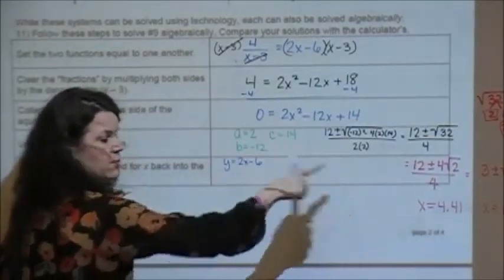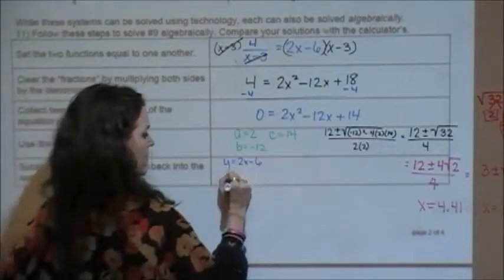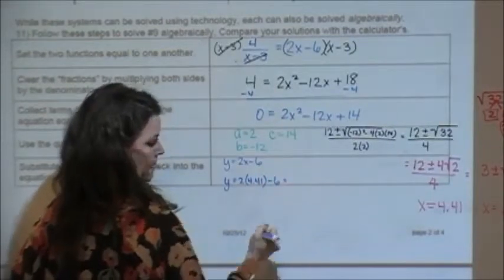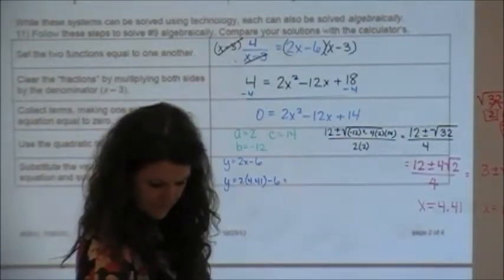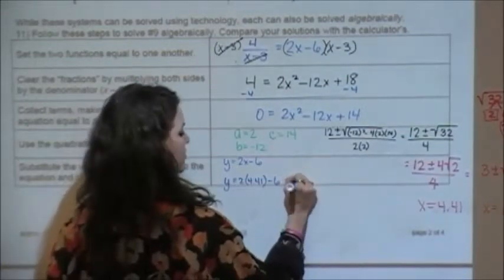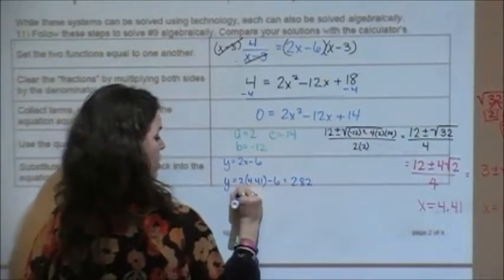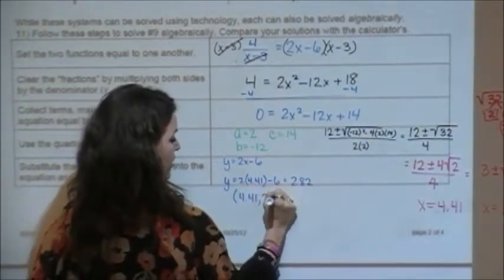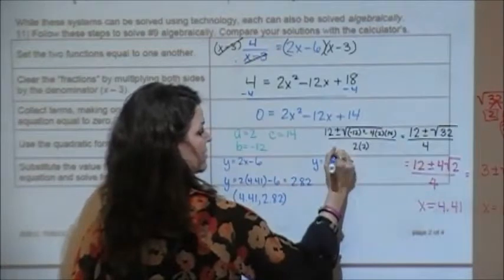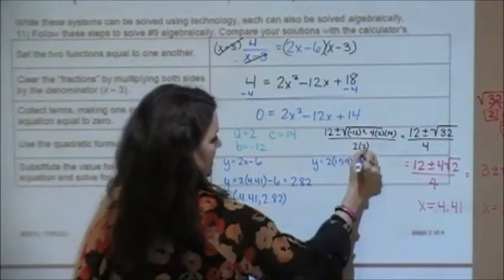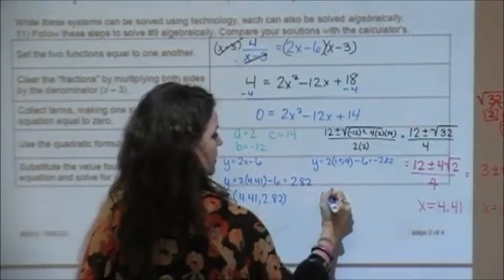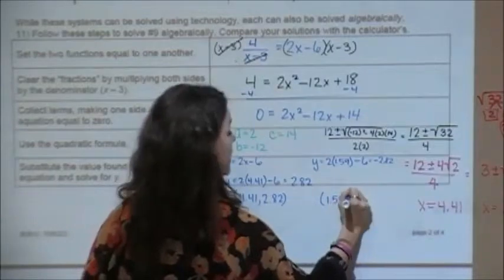I'm going to do y equals 2 times 4.41 minus 6. So I got 2.82, so my first ordered pair is 4.41 and 2.82. And then I'm going to do it again with my other x value: 2 times 1.59 minus 6, and that gives me negative 2.82. So my other ordered pair is 1.59 and negative 2.82.